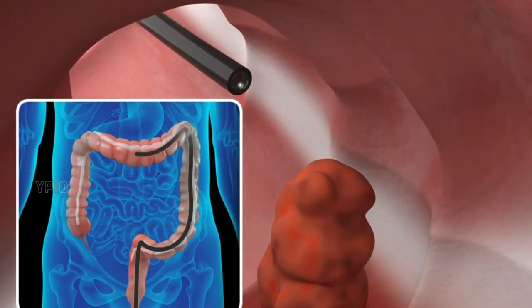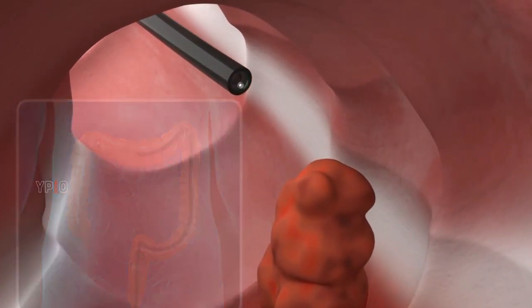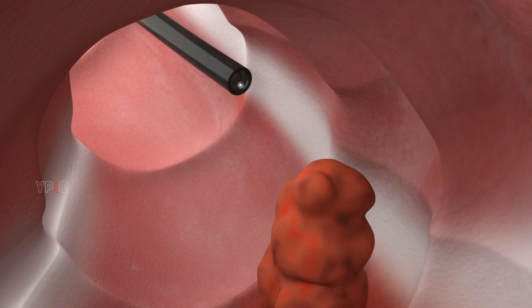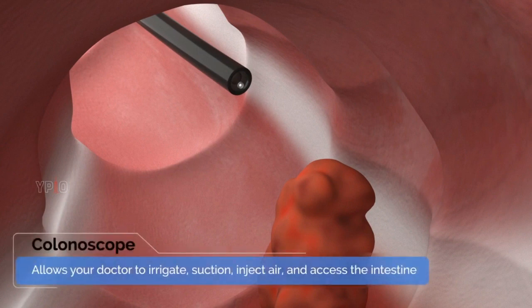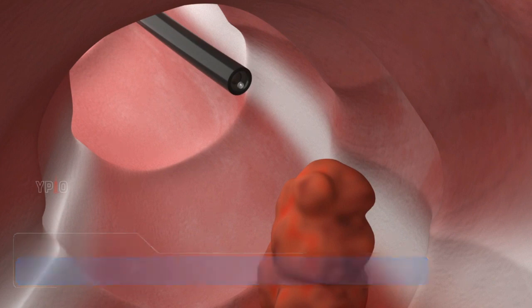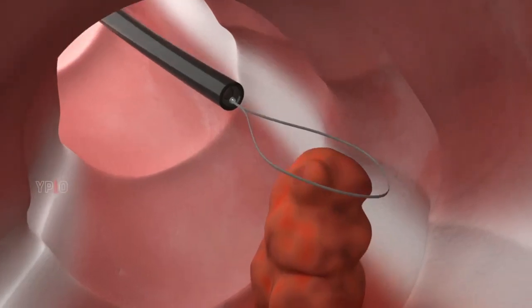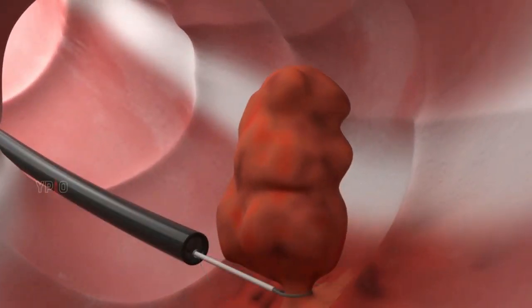A colonoscope will be inserted into your rectum so your physician can view all segments of your colon. In addition to enabling visualization of the internal colon, the colonoscope allows your doctor to irrigate, suction, inject air, and access the intestine with surgical instruments. Your physician will remove any polyps and possibly surrounding tissue for further examination, and possibly treat any other problems that are detected.